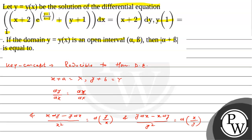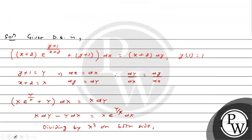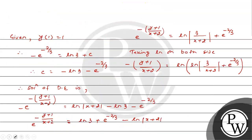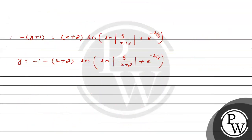The domain of y = y(x) is an open interval (alpha, beta). For finding the domain, we need the argument of the outer ln to be greater than 0. That is, ln|3/(x+2)| plus e to the power minus 2/3 should be greater than 0, and also |3/(x+2)| plus e to the power minus 2/3 should be greater than 0.